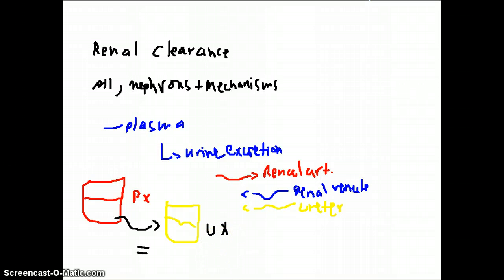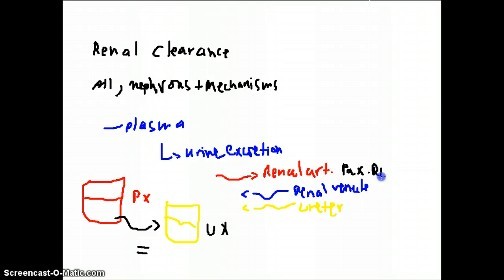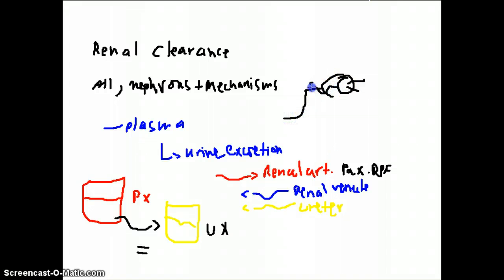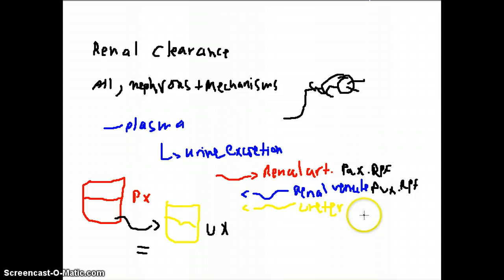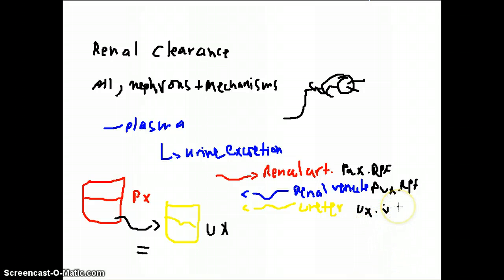Each of these can be represented mathematically. The renal arterial input is the plasma concentration of X multiplied by the renal plasma filtration — basically the flow into the Bowman's capsule — telling us how much is being filtered at each moment. The venule is the venous concentration of X multiplied by the renal plasma flow, and for the ureter it is the urine concentration of X multiplied by the urine flow in milliliters per minute.